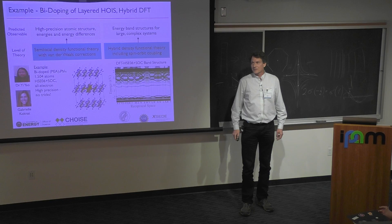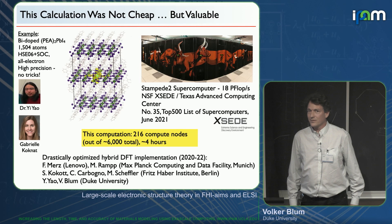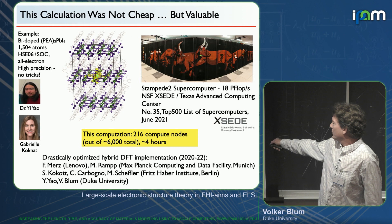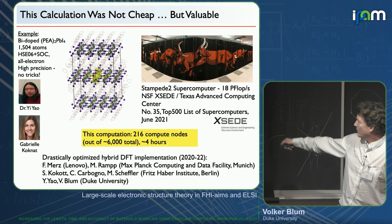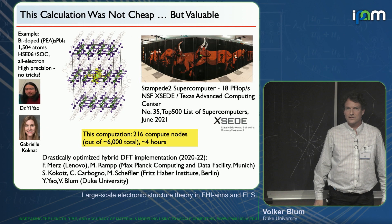This was done on the Stampede2 supercomputer at Texas Advanced Computing Center, at the time number 35 on the Top500 list. We used 260 nodes, each with 48 CPU cores, and the hybrid DFT calculation for this 1,500-atom structure costs about four hours per SCF iteration. This is a large calculation but it's not undoable — it's not exascale, it's feasible.